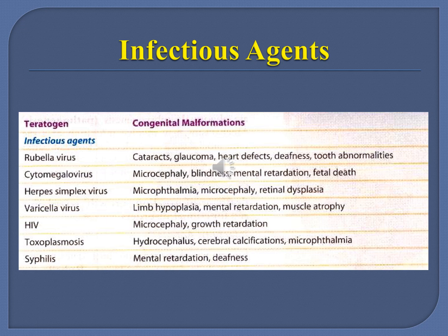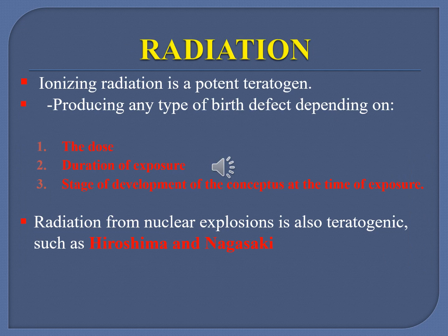These infective agents can cause congenital malformations if they affect a pregnant lady. Radiation effects are also well known — from Hiroshima, Nagasaki, and Chernobyl. The dose of radiation, the duration of exposure, and the stage of development of the conceptus at the time of exposure all play an important role in determining the extent of congenital defects caused.